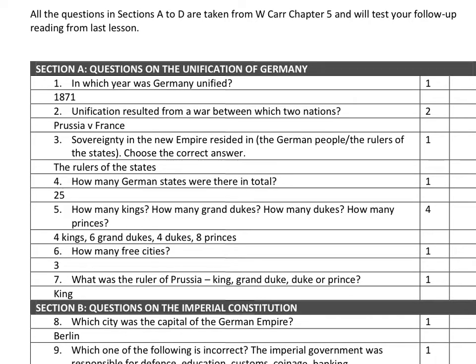As you can see on this version, the answers are typed in. Question one: in which year was Germany unified? 1871. Question two: unification resulted from a war between Prussia and France. Question three: sovereignty in the new empire. It obviously resided in the rulers of the states — it did not reside in the German people. Sovereignty means the right to rule, where power lay.